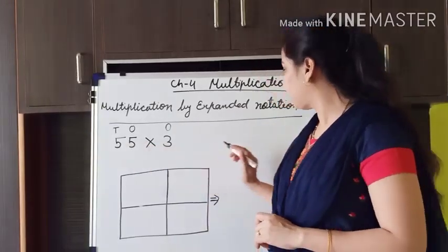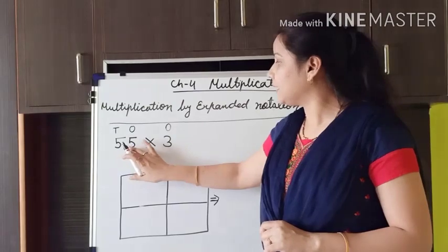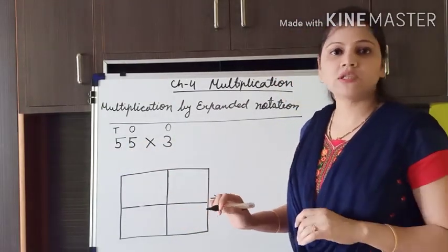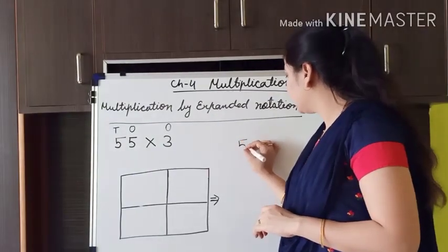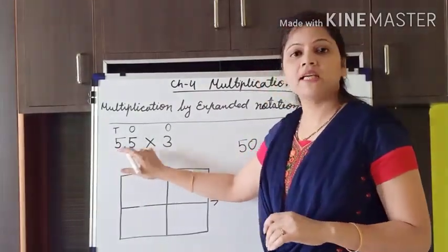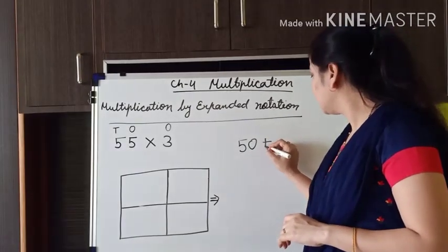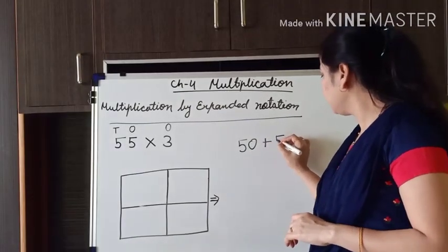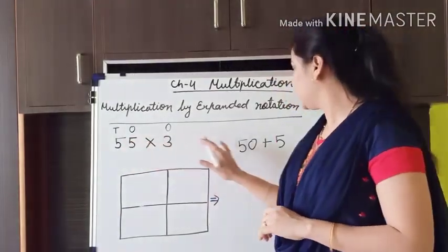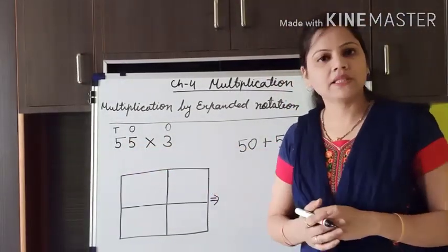55 can be written as: how many tens are there in 55? 5 tens. 5 tens is equal to 50, so the place value of this 5 is 50, plus 5. 50 plus 5 equals 55. So here we have broken this number by their place values.